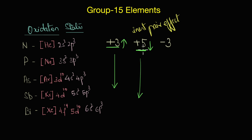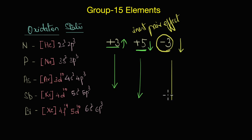What about the −3 oxidation state? It turns out that, just like +5, the tendency to show the −3 oxidation state also decreases as we go down the group. The −3 state means the element is gaining three electrons. As we go down, metallic character increases, meaning heavier elements are more likely to lose electrons than gain additional ones.